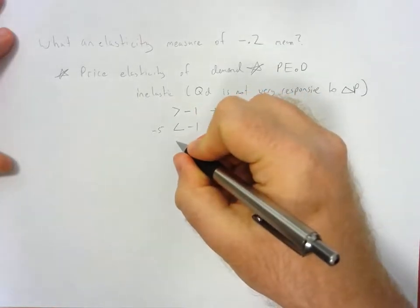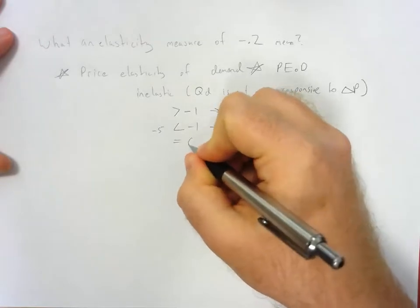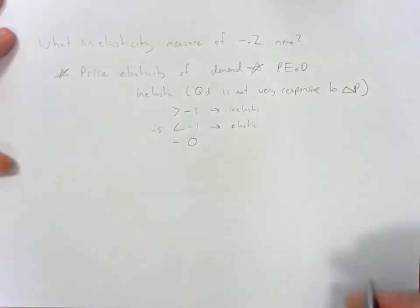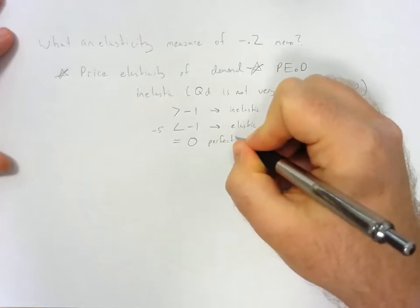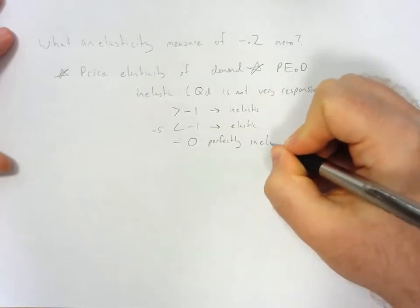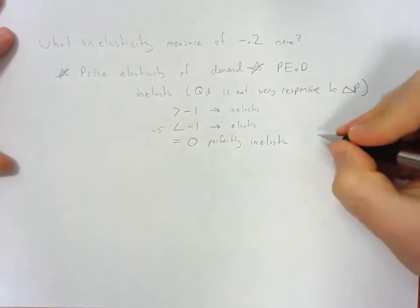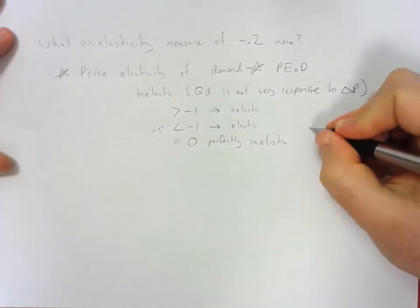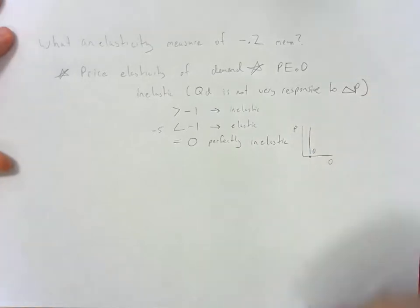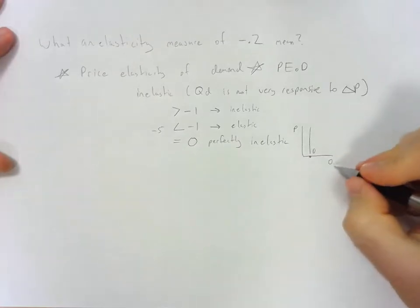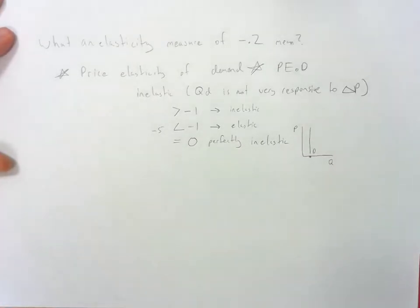Also, it's possible that the elasticity measure could be equal to 0, and this would mean that it's perfectly inelastic. You could imagine a demand curve that looks something like this. No matter how much price changes, we're still going to buy it. So you could imagine something like medicine that's going to save your life. No matter how much the price changes, you're still going to be buying that.